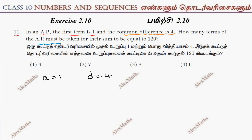How many terms of an AP must be taken for the sum to be equal to 120? So Sn equals 120.